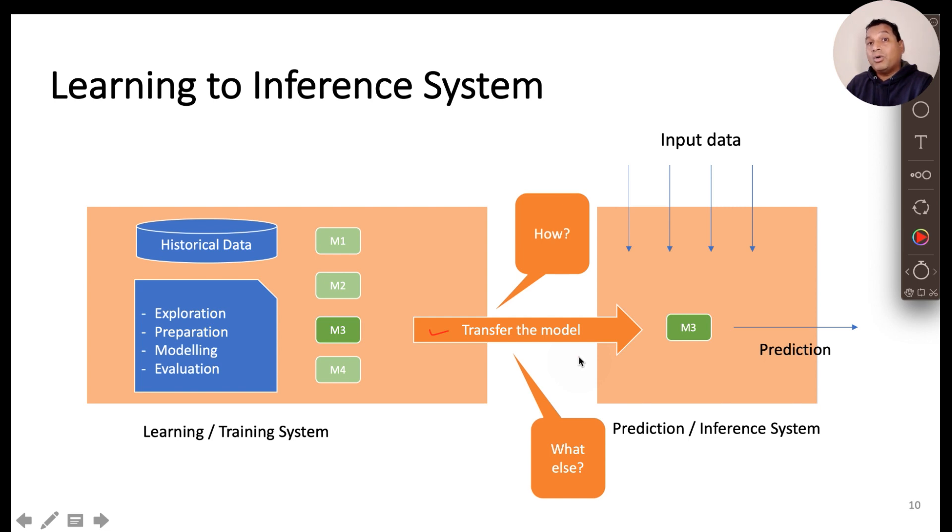And do we only need to transfer the model or any other specific information that needs to be transferred from the learning system to the inference system? If yes, what information? And how do you transfer that information along with the model as well?